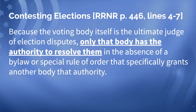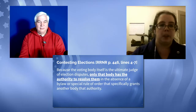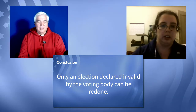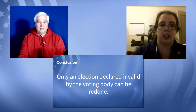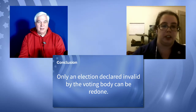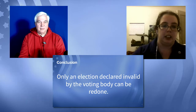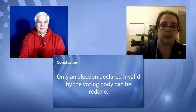And then you have a couple of options from there. Going to the next slide on contesting elections, page 446, lines 4 through 7: the voting body itself is the ultimate judge of election disputes. Only that body has the authority to resolve them in the absence of a bylaw or special rule of order that specifically grants another body that authority. Basically, the results of an election are valid because the members say that they are, and an election can be declared invalid by the voting body and redone at that point.